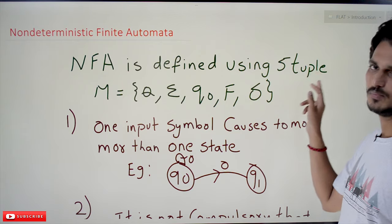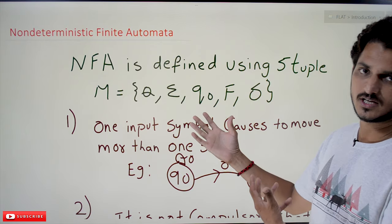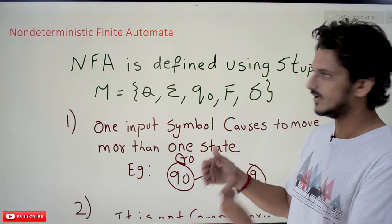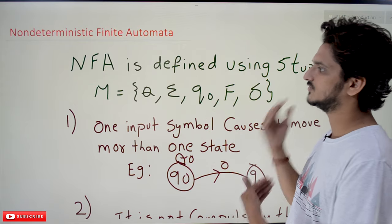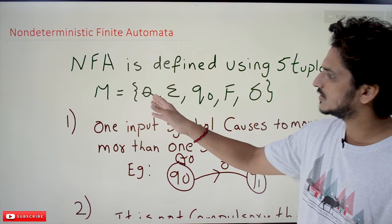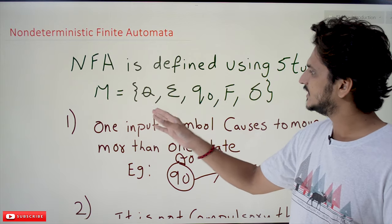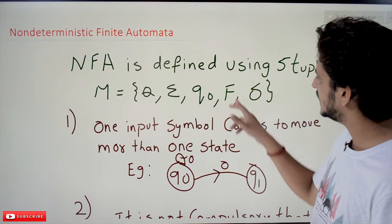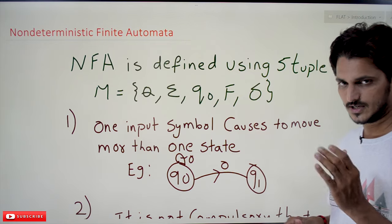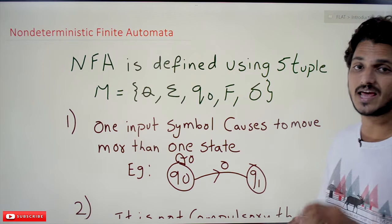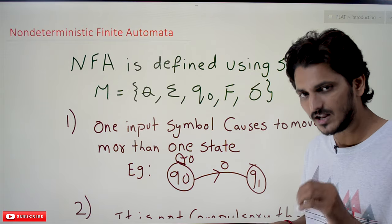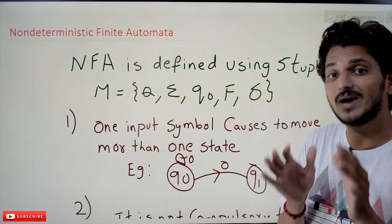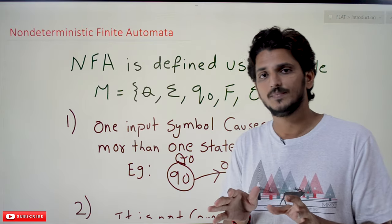NFA is defined using a 5-tuple. We already know what these 5-tuples are — DFA is represented using 5-tuples, and the same way NFA is also defined using 5-tuples. Those 5-tuples are: Q means set of states, sigma means set of input symbols, Q0 means initial state, F means set of final states, and delta means transition function.